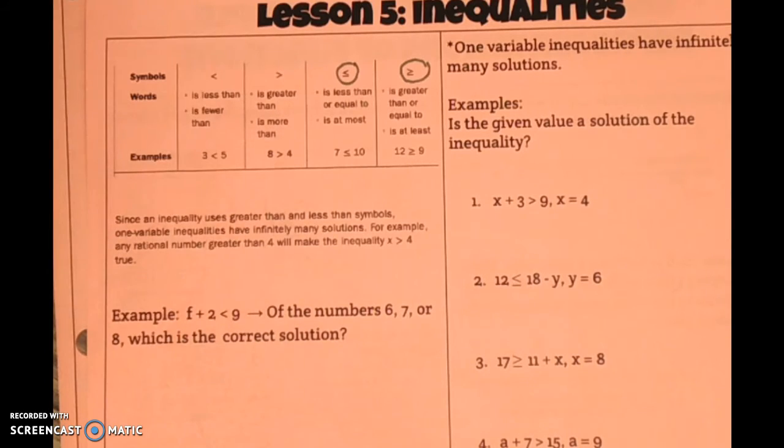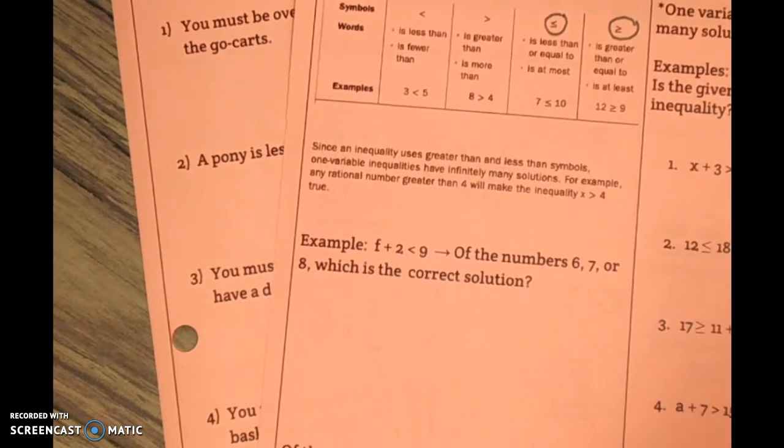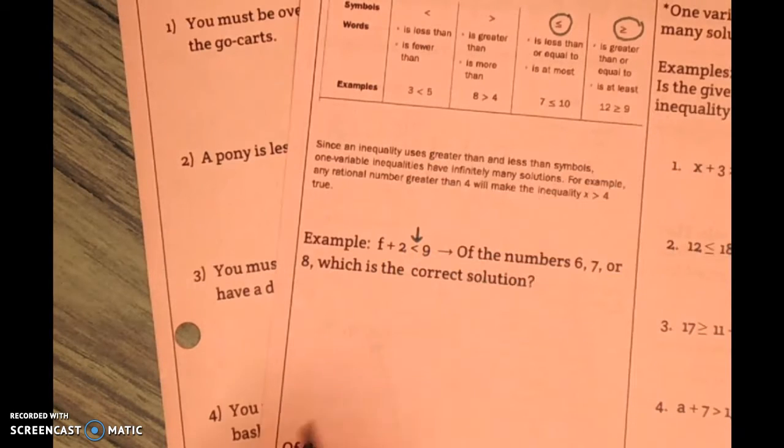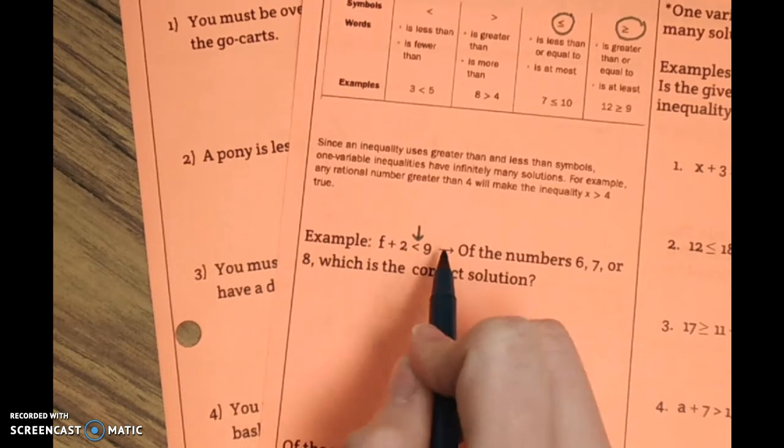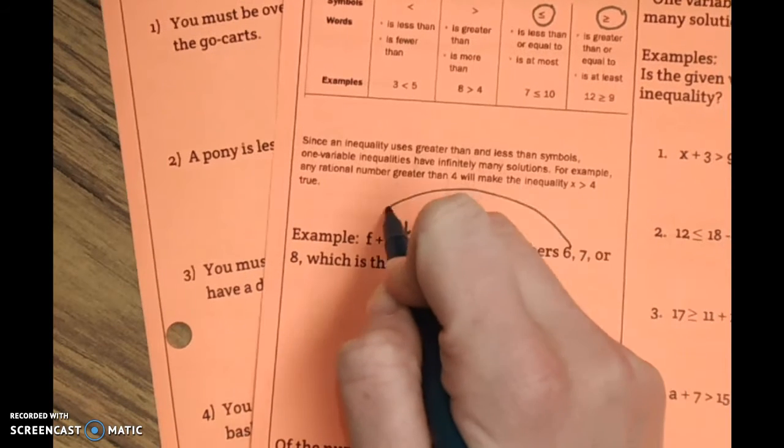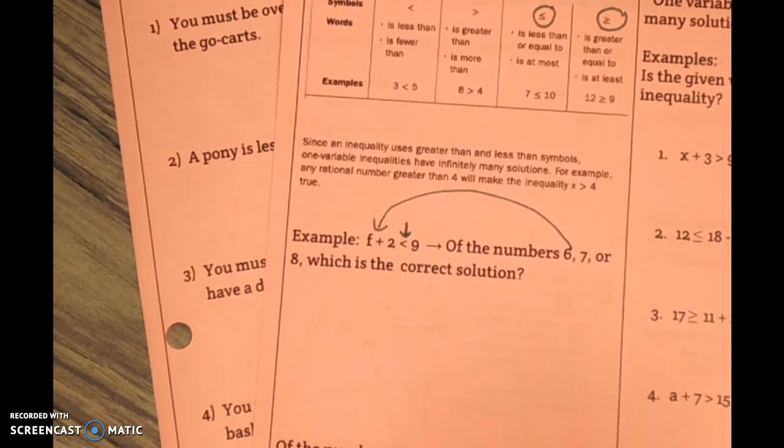Okay, so let's take a look at this first one. This is kind of similar to our last chapter where we did equations. However, this time instead of an equal sign, it is a less than sign. So, we have f plus 2 is less than 9. We need to figure out which of these numbers makes that true. If we start just with the top and we plug that in, we have 6 plus 2 is 8. 8 is less than 9.